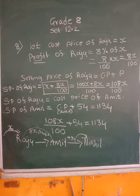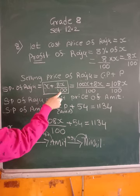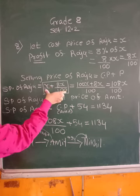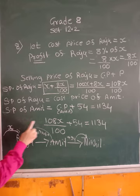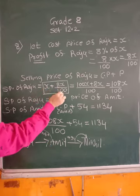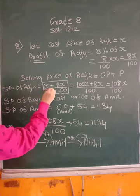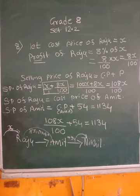I am repeating again. Cost price of Raju is X rupees and profit of Raju is 8X upon 100. Cost price plus profit together will give selling price of Raju. So Raju has sold it to Amit at X plus 8X upon 100. Now I have converted this. Only X is X upon 1. Are the denominators same? No, so we need to cross multiply.